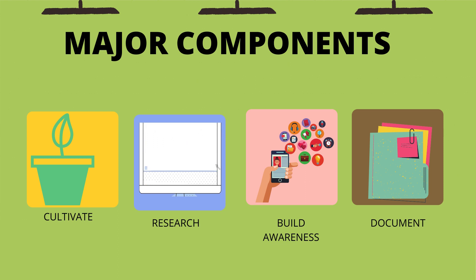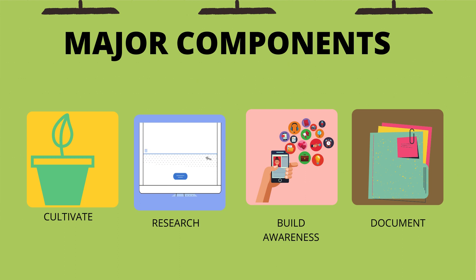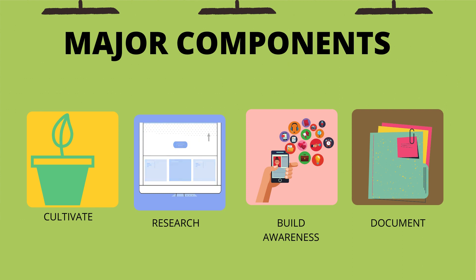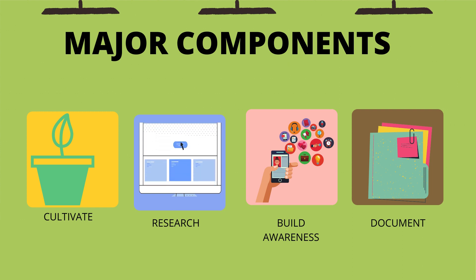There are four major components to this project. Component one is to cultivate. Component two is to research whatever you're going to be cultivating, including the viable techniques. Component three is to build awareness online via a social media platform. You are also expected to document your process, progress, and experience.